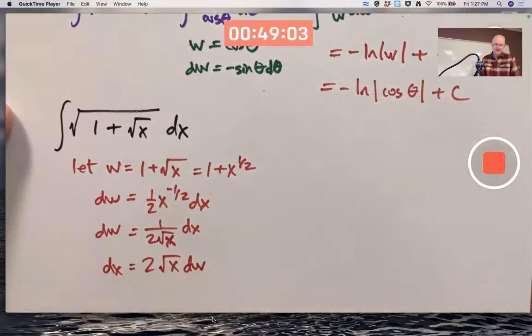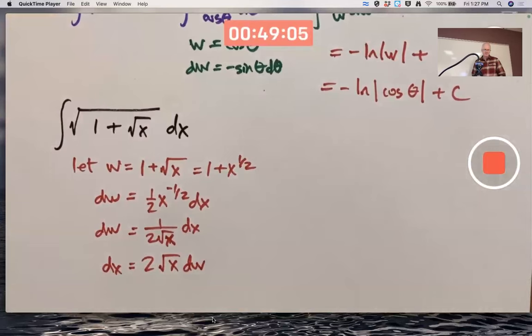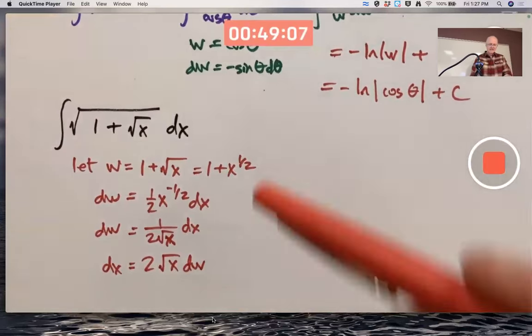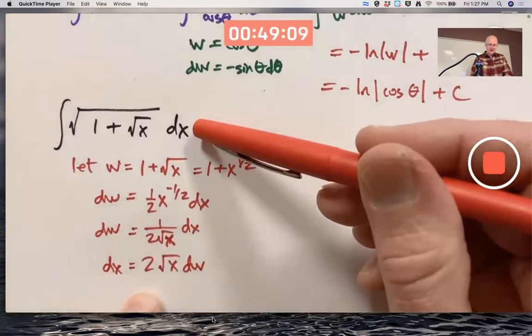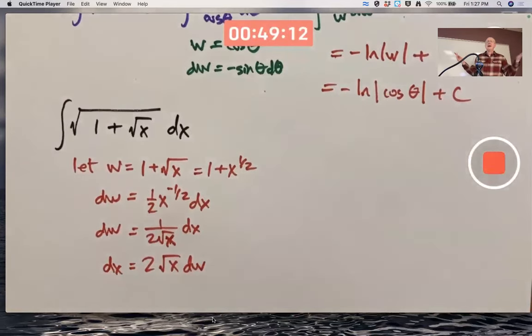But wait a minute. How is that helpful? If I replace dx with 2 square root of x dw, I still have an x in there. I don't want any x's anymore. Anybody got a guess as to how to get around this?